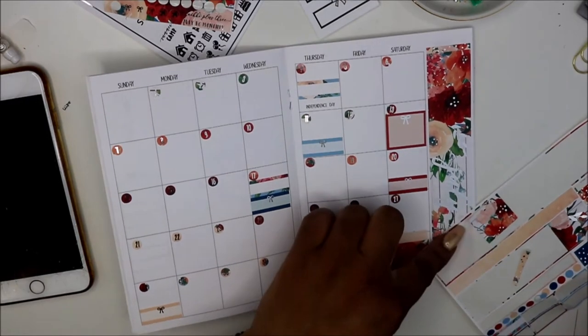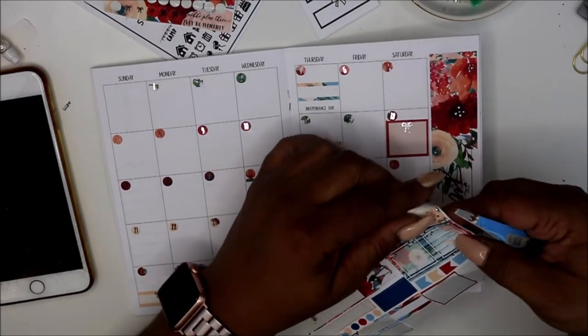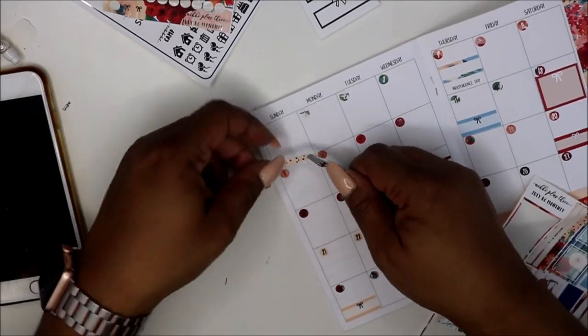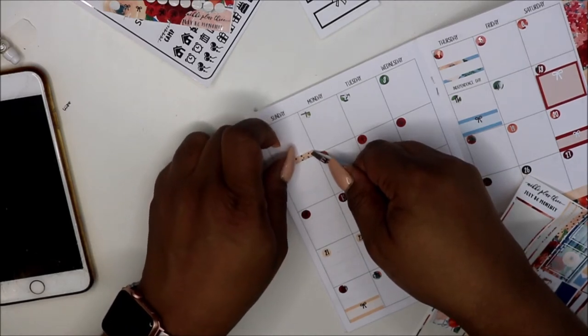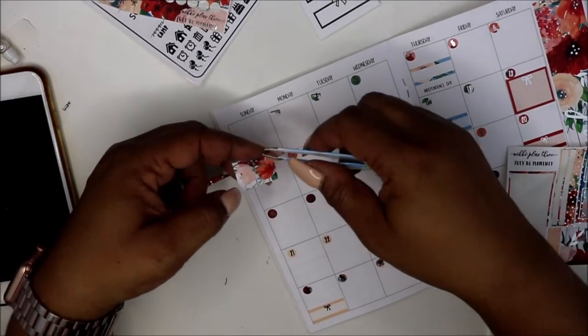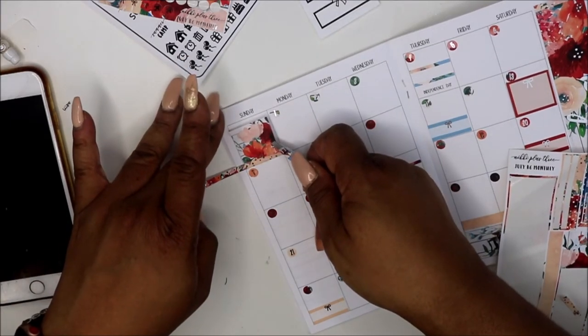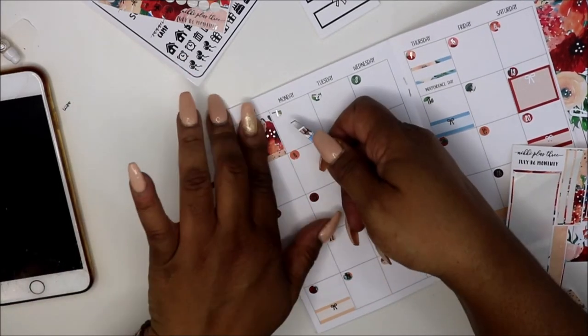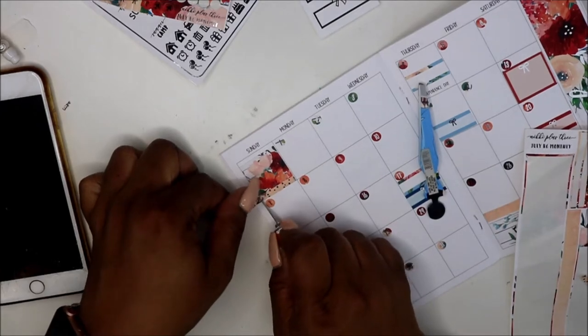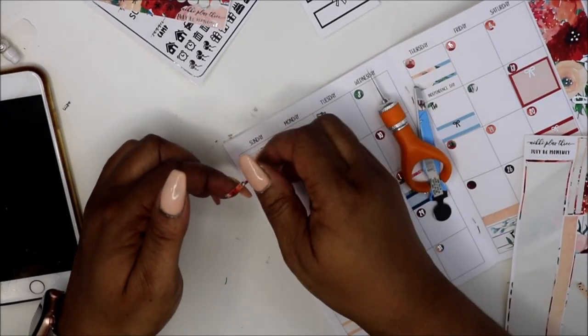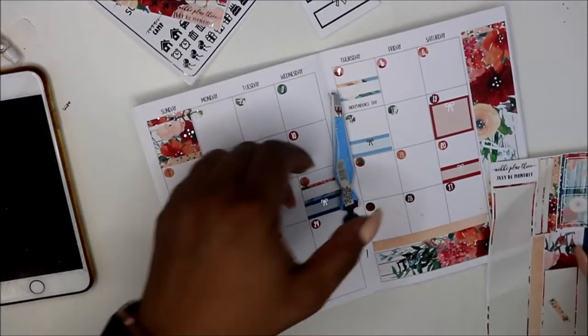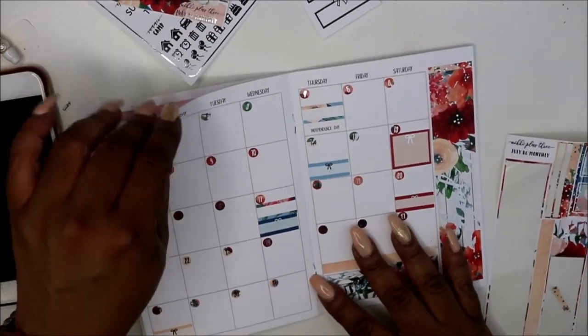And then what I think I'm going to do for over here, I'm going to use one of these little washi, cut it and use that as a, to fill in this gate. Okay so I fit that in.